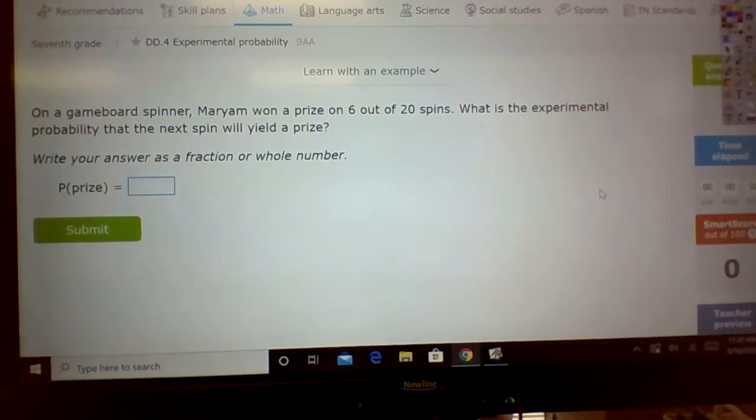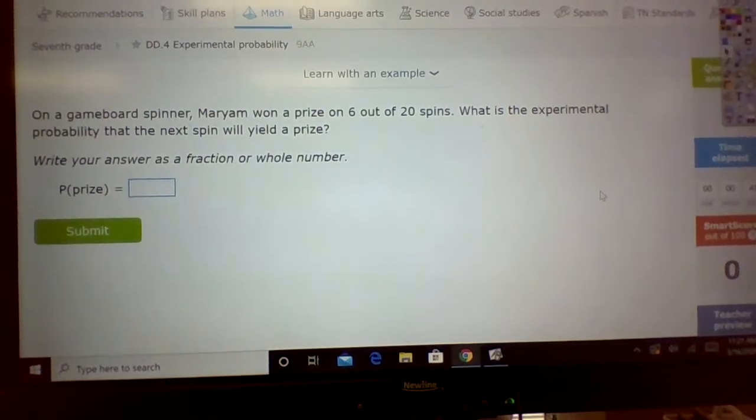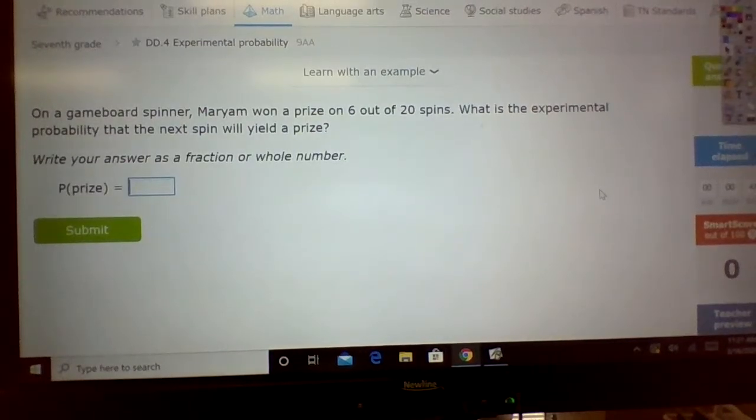So on this example, on a game board spinner, Miriam won a prize on six out of the 20 spins. What's the experimental probability that the next spin would yield the prize? Well, first of all, going back to what we constantly seem to be doing, and that is total on the bottom and part on the top, she won six out of 20. This of course could be reduced, or you can write it just like that. Six out of 20.